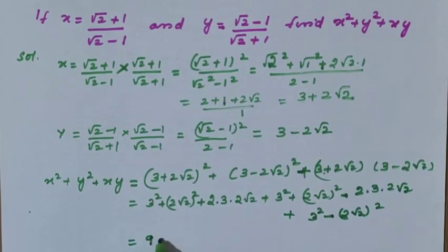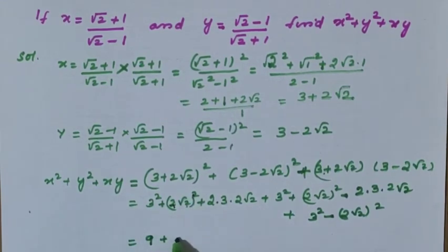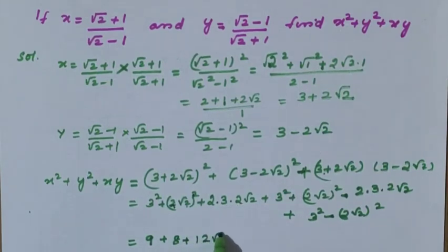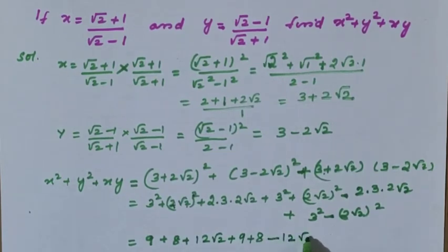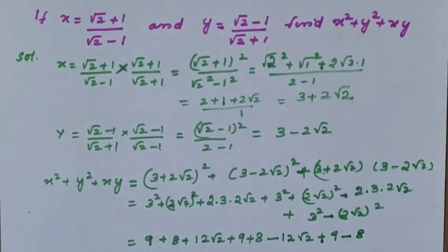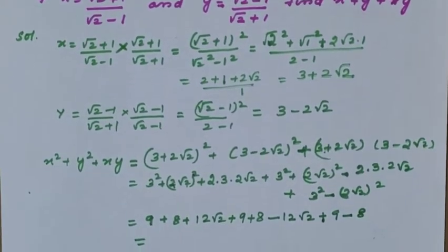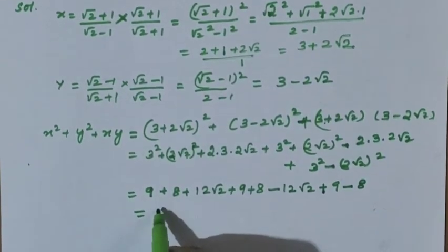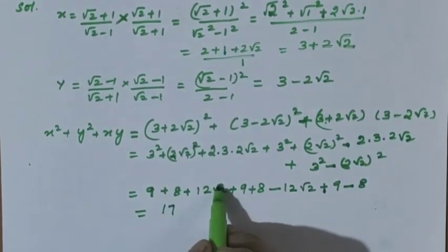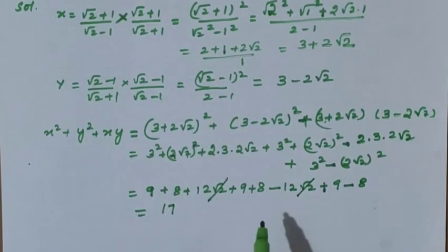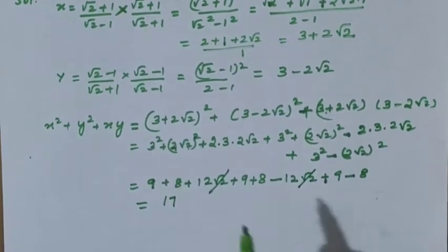What is 3 squared? It is 9, and 2 root 2 squared: 2 squared is 4, into 2 it is 8. So we have 2 into 3 into 2 root 2, that is 12 root 2, plus 9 plus 8. What is 9 plus 8? It is 17. Plus 12 root 2 and minus 12 root 2 will cancel. Again, one more 17 we get.